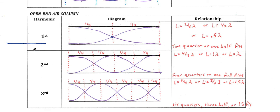I personally like to leave it as two quarters because the concept matches the math better — there are literally two quarters of a wave here. For a second-order harmonic, open-ended air columns operate very similarly to closed-ended air columns in that we're just adding nodes. Every time we go from one to two to three harmonics, we just continue to add nodes. There is one node in the first harmonic; now there are two nodes here.